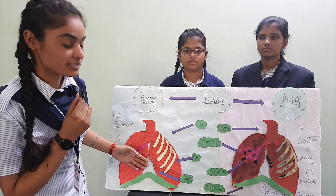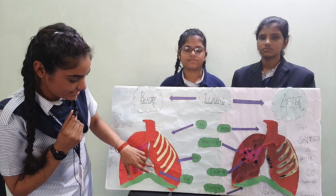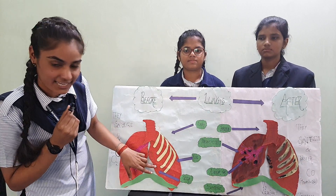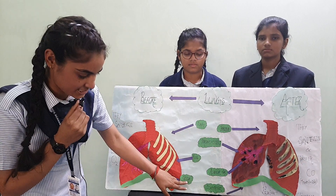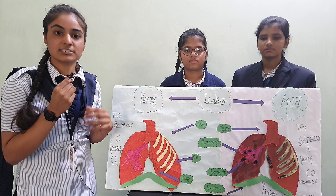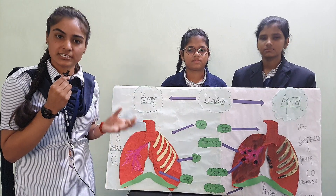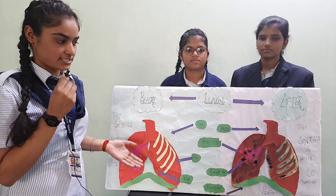This is our respiratory organ called lungs. In lungs there is a hair-like structure which is called cilia, which protects our lungs from dust, dirty particles, and other substances.